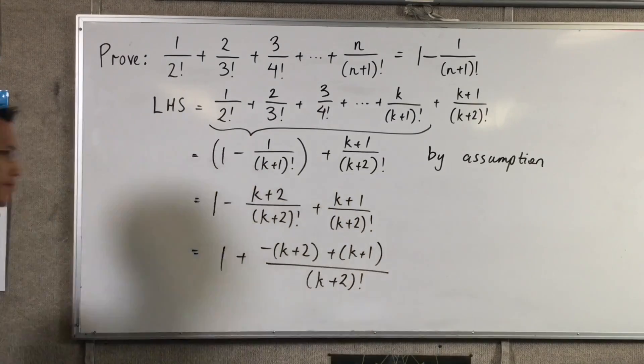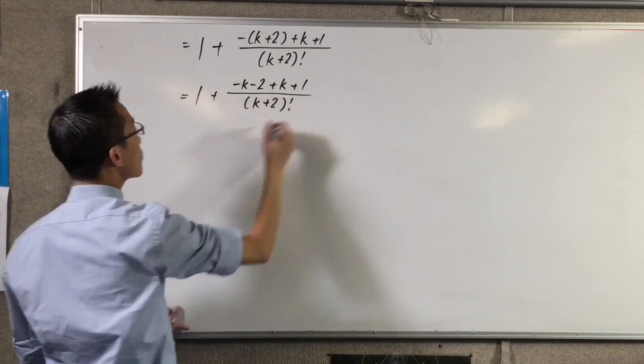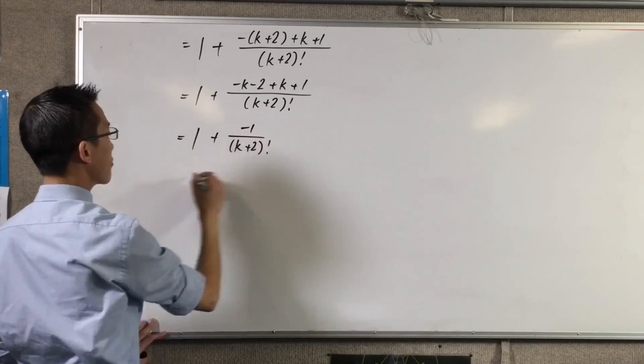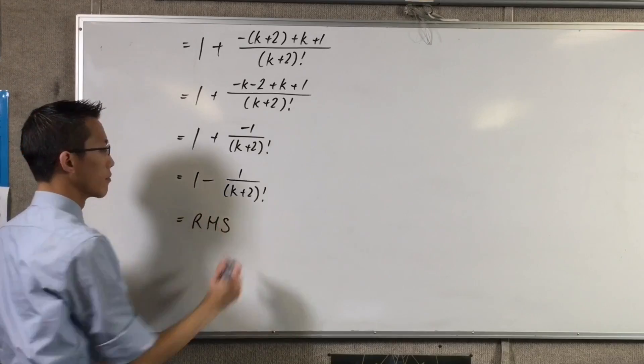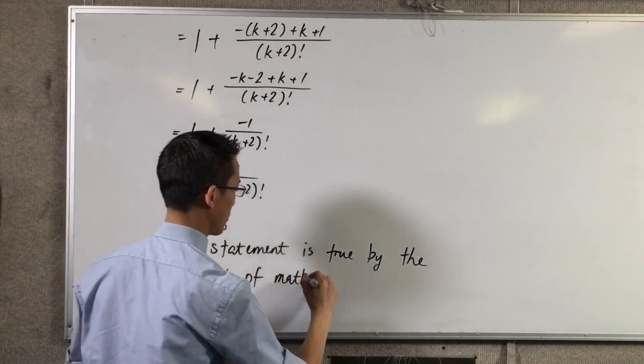I can use my knowledge of the factorial function to get a common denominator for these two fractions, which then allows me to combine them into one. From there it's very straightforward to show the result I wanted, and my proof step is complete.